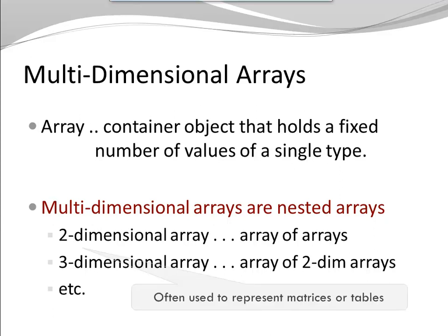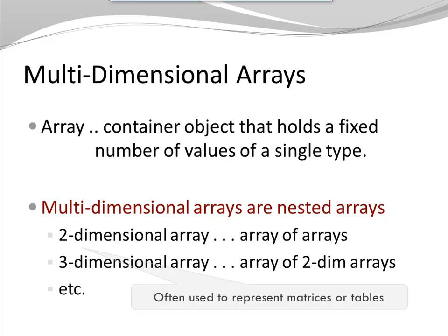Two-dimensional arrays are often used to represent matrices or tables. Let's look at an example. Let's say we have a two-dimensional array, we call it table, and it consists of two rows, row zero, row one. Now remember, a two-dimensional array is an array of arrays, so each of my rows is an array itself. Here, I have row zero, a character array A, B, C, and D.